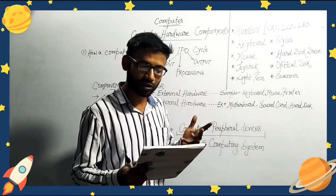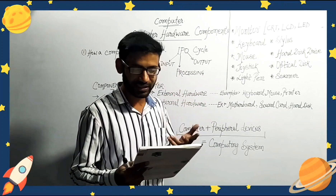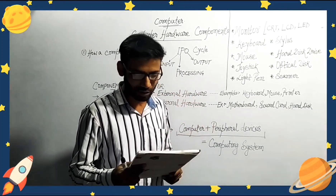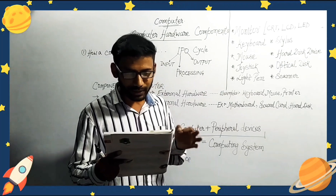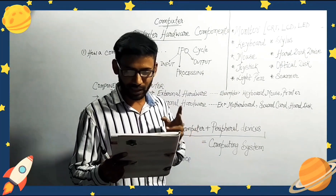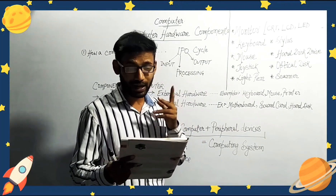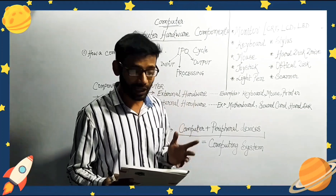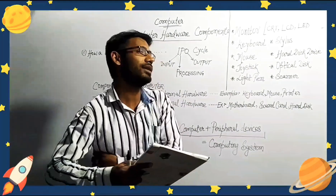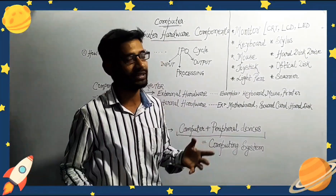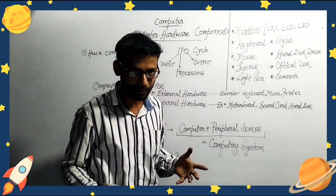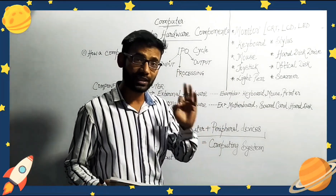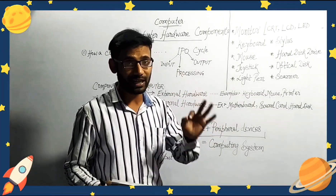DVD stands for Digital Versatile Disc or Digital Video Disc — the more commonly used term is Digital Video Disc. It is a commonly used optical disc storage media mainly used for video and data storage. A DVD has much more capacity than a CD — a compact disc has a capacity of 700 MB, while a DVD has a capacity of 4.7 GB, which is 4700 MB.